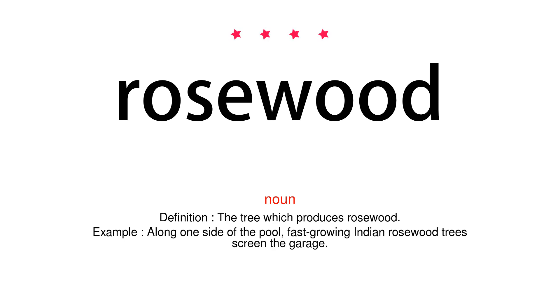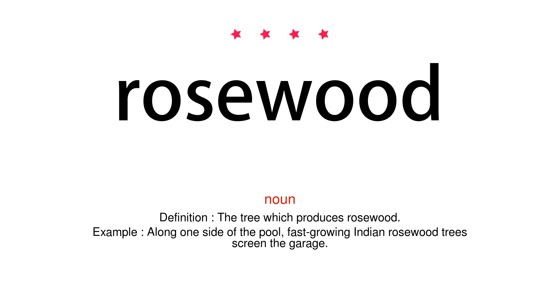Noun. Definition: The tree which produces rosewood. Example: Along one side of the pool, fast-growing Indian rosewood trees screen the garage.